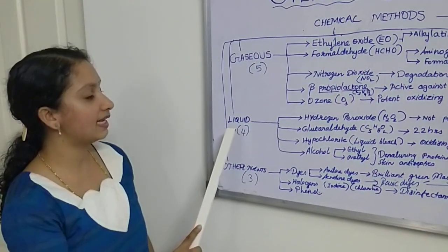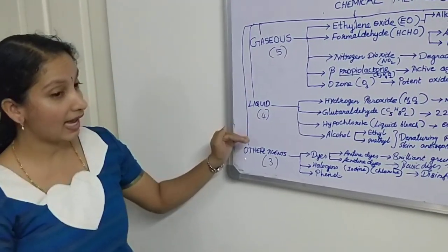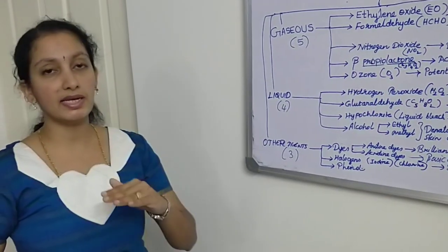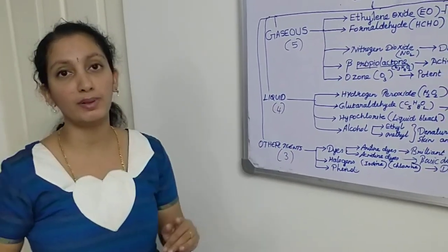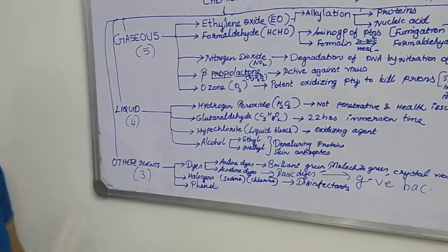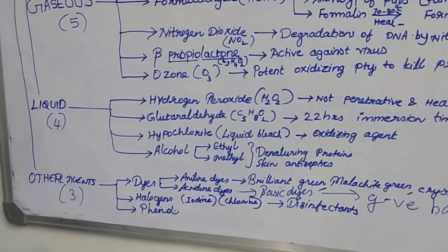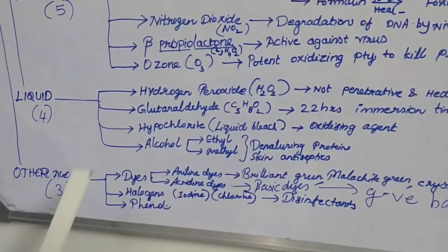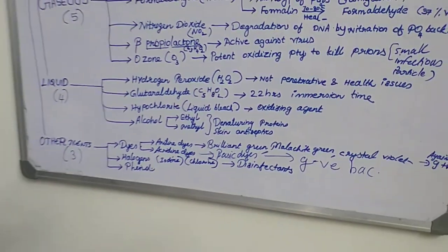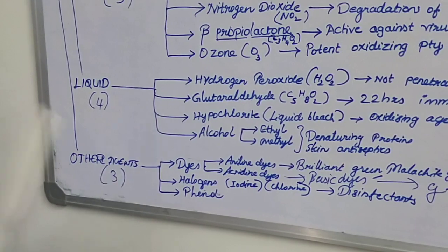Moving to the next chemical method: the liquid method. In the liquid method, objects to be sterilized are dipped into the chemical solution. There is a soaking or immersion time that must be followed for proper removal or killing of microorganisms. The four liquid agents are: hydrogen peroxide (H₂O₂), glutaraldehyde (C₅H₈O₂), hypochlorite (ClO⁻) — a type of liquid bleach used in COVID treatment — and alcohol.